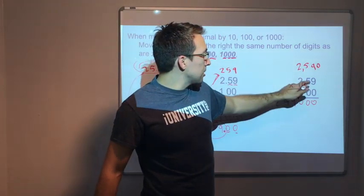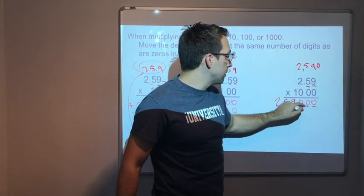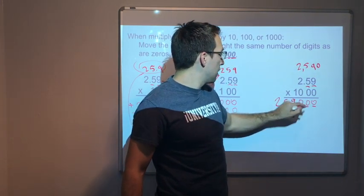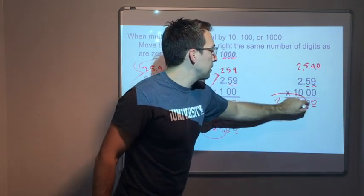How many decimals? I have two decimal places. One, two. So I'm going to knock those off. Put the decimal there. 2,590.